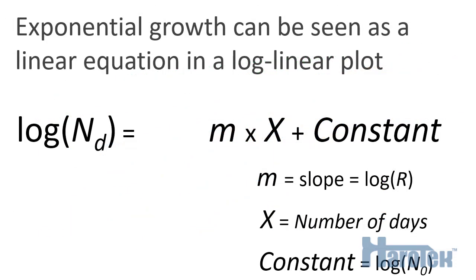This means that the progression of the virus has slowed down. Using an exponential equation to track the propagation of a virus is valid only at the beginning of a pandemic. As time progresses, the rates tend to decrease, so we need to modify our equation to take into account the so-called flattening of the curve.